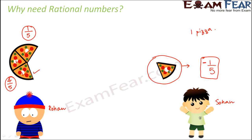So gradually, as Sohan keeps eating, his balance is reducing. Initially he had five slices, then zero, and now he has minus one-fifth of the pizza. Now if I ask you: do we have numbers like these which can represent the negative of fractional numbers? We have learned about fractions — like one by two, two by three, one by five, eleven by thirteen — but fractions always talk about positive numbers. What about numbers that look like fractions but are negative? We really did not have any such numbers, and that is where the need of rational numbers came into being.